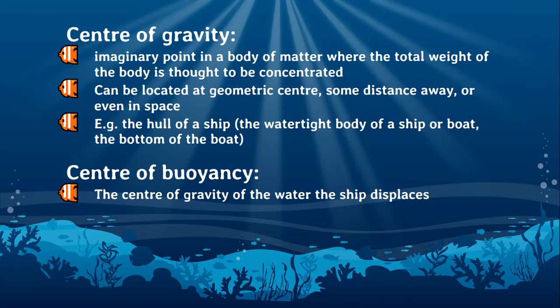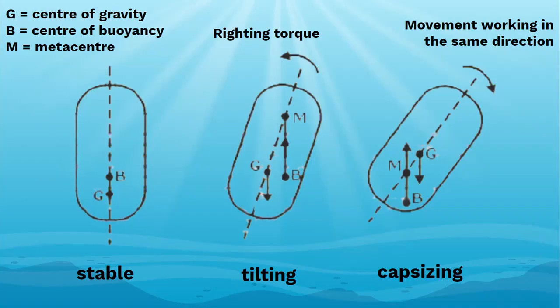The second is the center of buoyancy, which is the center of gravity of the water the ship displaces. For the boat to be stable, the center of gravity must be lower than the center of buoyancy, which usually occurs when both centers are on the same vertical line. The dotted line in the center is called the metacenter. In the first image the ship is stable; in the second, the hull tilts — the center of buoyancy moves to fit the changed displaced volume, creating a righting torque. However, if the hull tilts too much, the center of buoyancy moves below the center of gravity, causing the boat to capsize. The main takeaway is to ensure your boat's structure is stable enough to avoid capsizing.